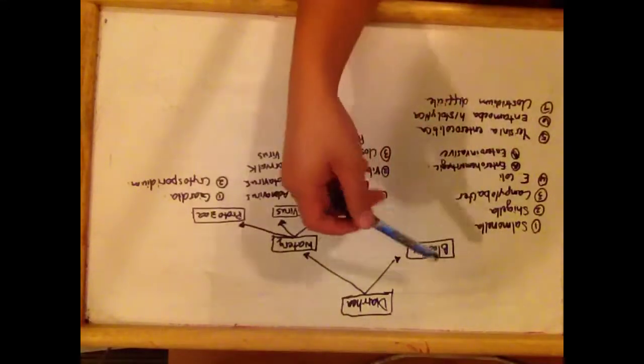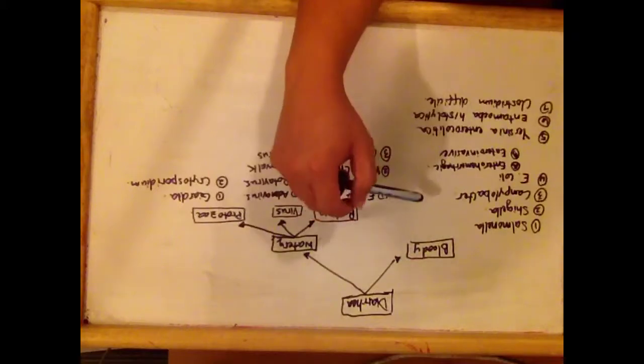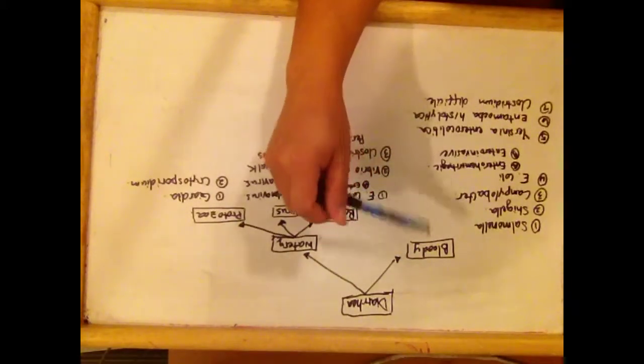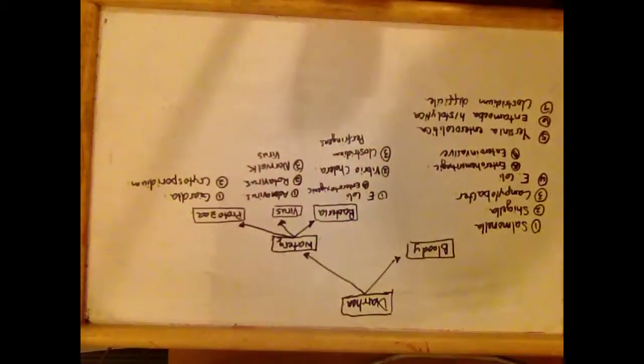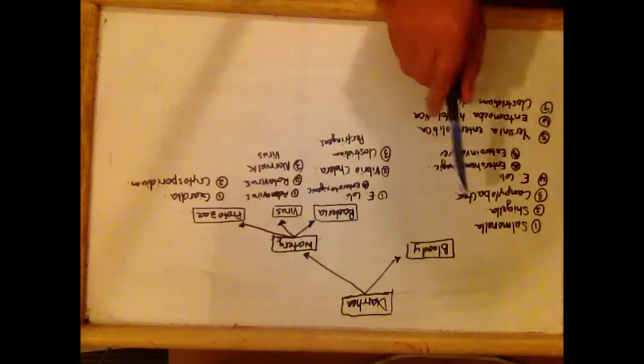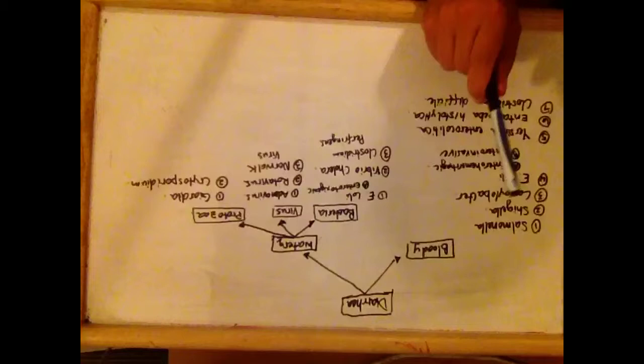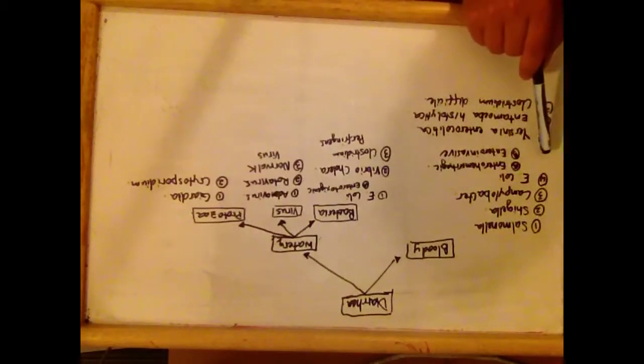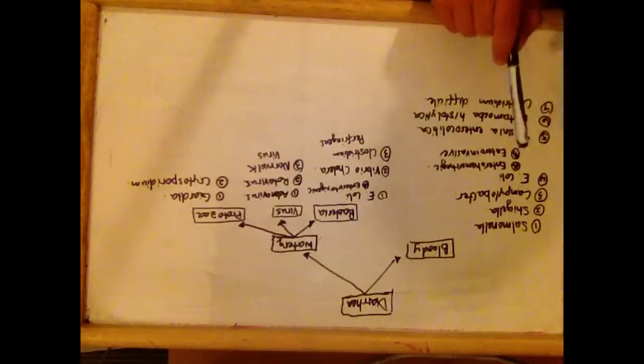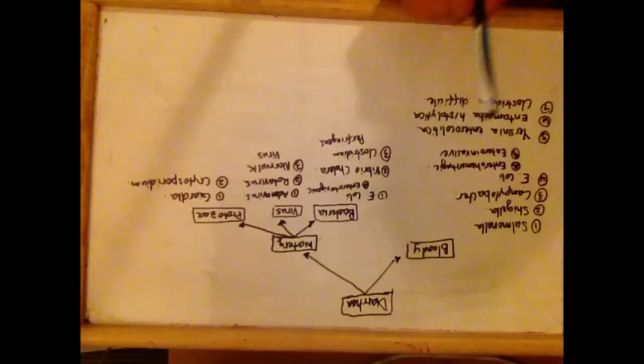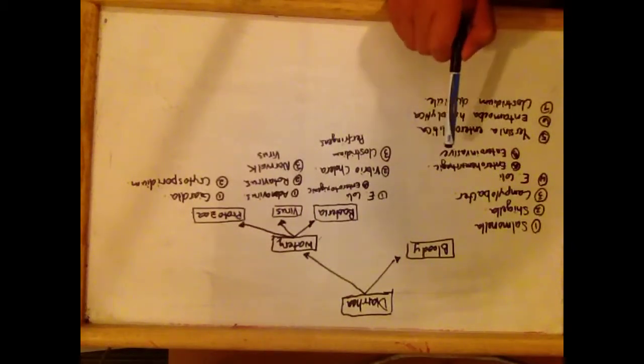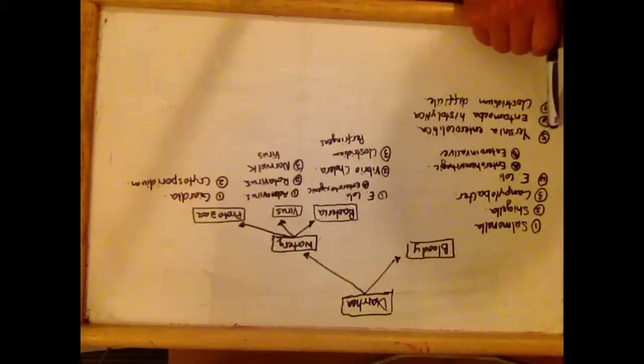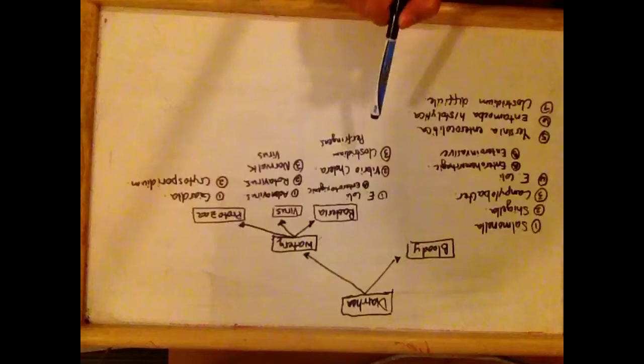In bloody diarrhea, organisms that cause bloody diarrhea are mainly bacteria. Bacteria that cause bloody diarrhea are Salmonella, Shigella, Campylobacter, and E. coli. There are two types of E. coli that cause bloody diarrhea: Enterohemorrhagic and Enteroinvasive. Yersinia enterolytica also causes bloody diarrhea.